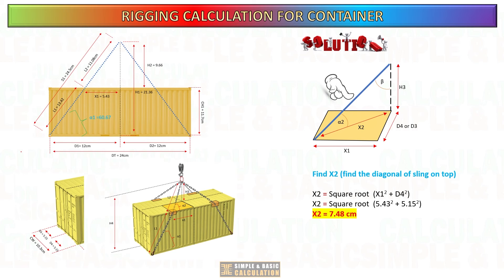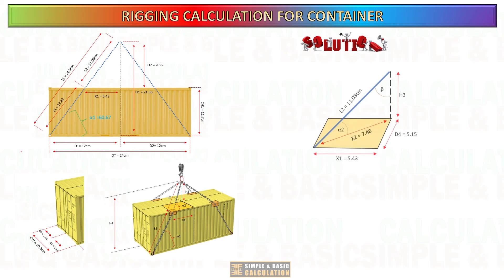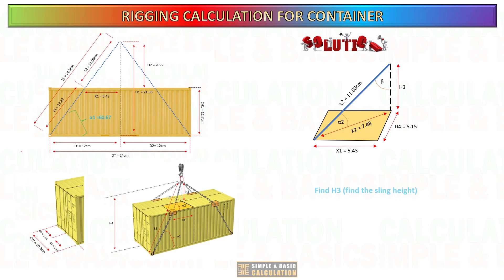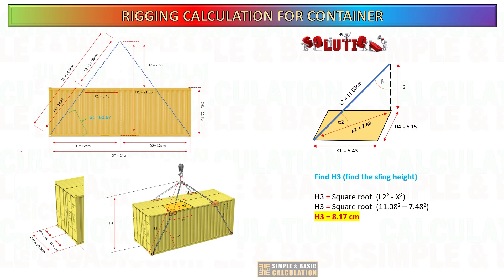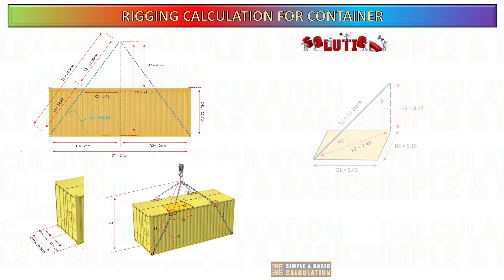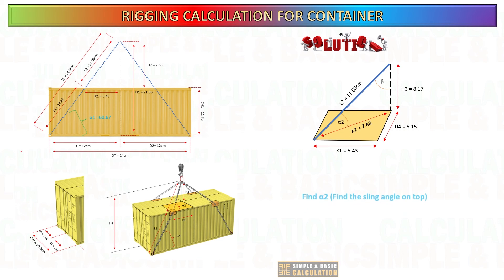Next, once we get the X2, we can determine now the height of the sling on top of the container. We can start to calculate the horizontal angle of the sling and the vertical angle of the sling on top.